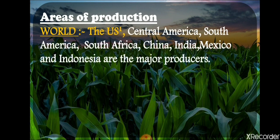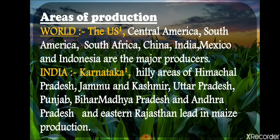For area of production of maize, USA is the leading producer. Central America, South America, South Africa, China, India, Mexico, and Indonesia are also major producers. In India, Karnataka is the largest producer of maize. Other producing states include hilly areas of Himachal Pradesh, Jammu and Kashmir, Uttar Pradesh, Punjab, Bihar, Madhya Pradesh, Andhra Pradesh, and eastern Rajasthan.